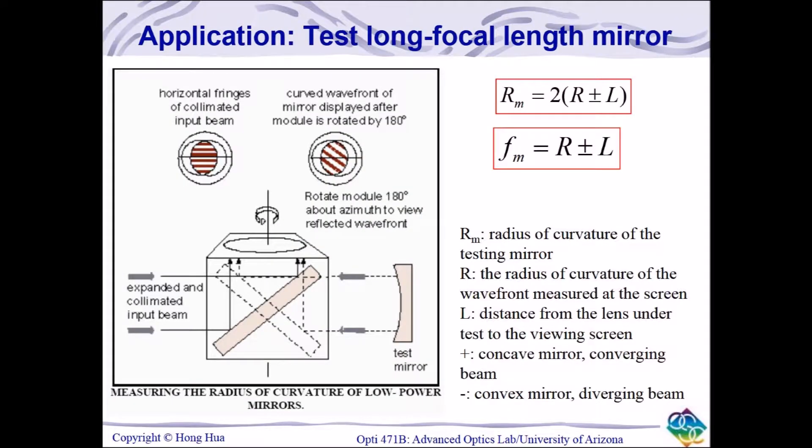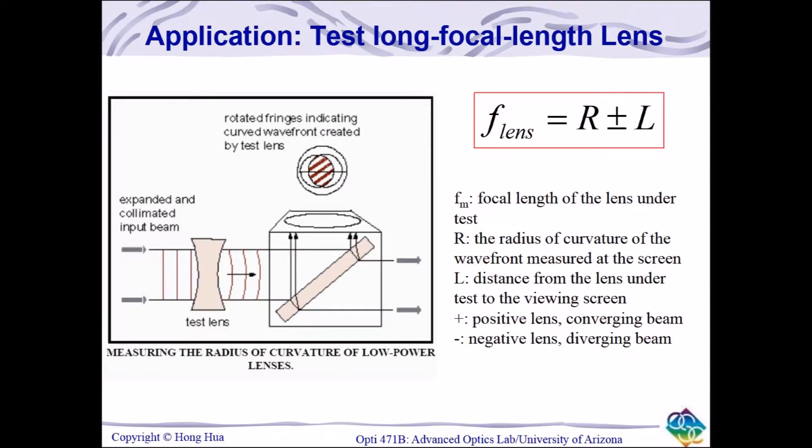When the incident wavefront on a wedged shear plate is spherical, the two reflected wavefronts again appear as two points, but this time, in addition to having a linear separation, there is also an angular separation.